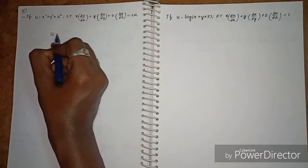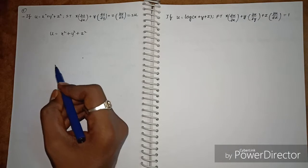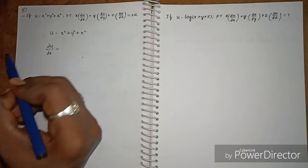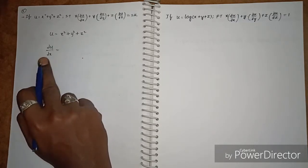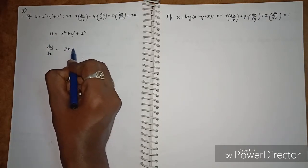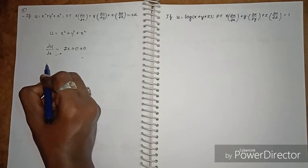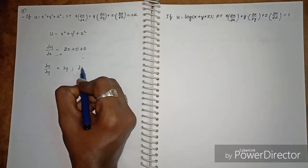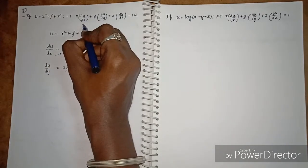Given u = x² + y² + z², we first find ∂u/∂x. Treating y and z as constants, the derivative of y² and z² with respect to x is zero. So ∂u/∂x = 2x. Similarly, ∂u/∂y = 2y, and ∂u/∂z = 2z.